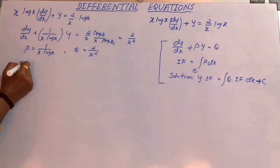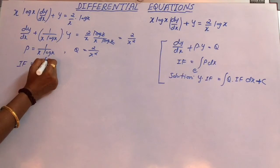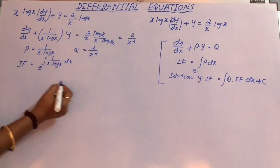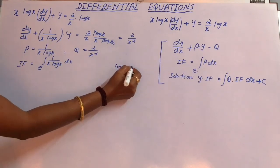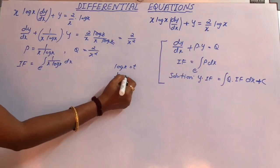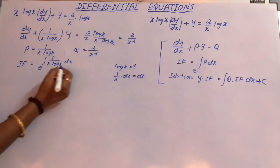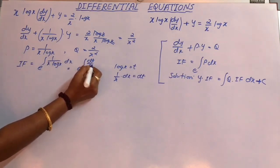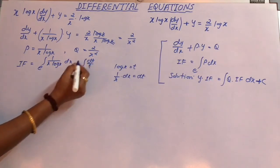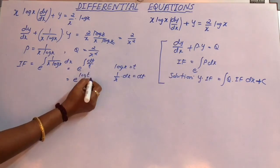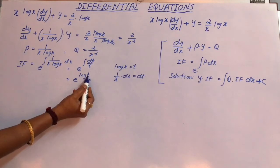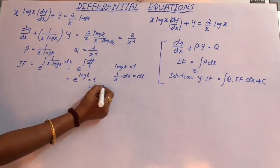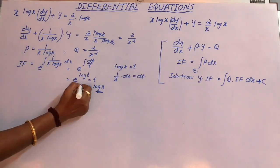The integrating factor equals e to the power of the integral of (1/(x·log(x))) dx. To integrate this, use substitution: let log(x) = t, so (1/x)dx = dt. The integral becomes ∫dt/t = log(t). Therefore e^(log(t)) = t, and back-substituting t = log(x), the integrating factor is log(x).